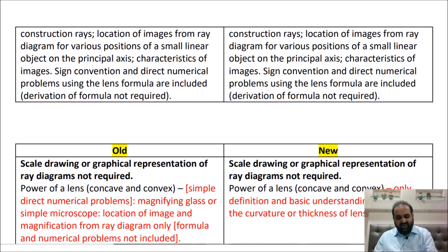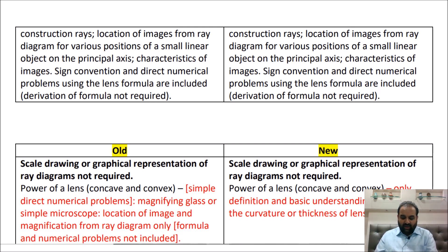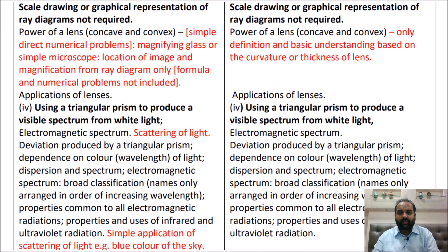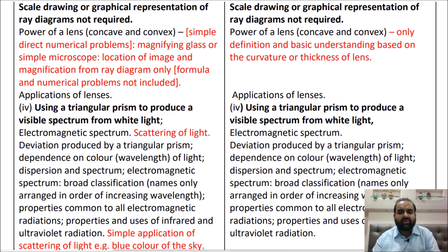In the D part, magnifying glass and application of lenses — the magnifying power formula (M = 1 + D/f) and those numericals are not there. You only need to understand what a magnifying glass is and draw the corresponding ray diagram. Applications of lenses using the auxiliary method are also not required. The last small part — distinguish between convex and concave lens — can definitely be asked.